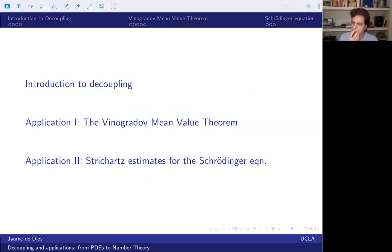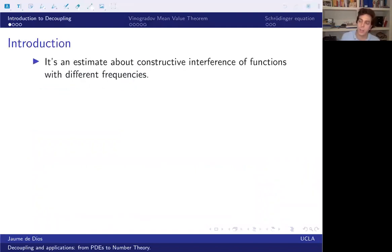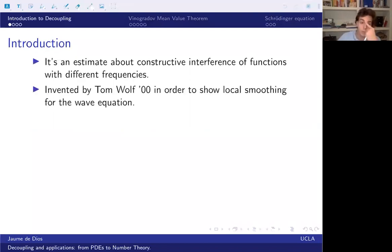So decoupling is a tool to relate different functions which are supported in different frequencies. So you will have functions that are like waves and you want to add them up and you want to understand when this addition will have a constructive interference and when it will not. As you might imagine, such an estimate was actually invented to understand the wave equation better. So Tom Wolfe in the beginning of the century invented this estimate or a variation of this estimate to show one of the key estimates for the wave equations that says that wave equations might blow up, but then they unblow themselves immediately after.